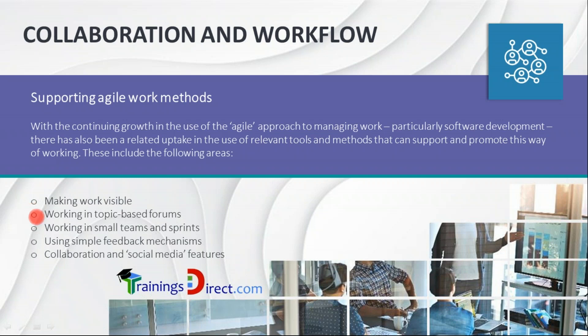Agile teams typically have five to nine people, but large agile organizations can have several agile teams, which is why agile program management and portfolio management exist. There should be feedback mechanisms such as daily quick meetings, end-of-sprint reviews to get feedback from customers or user representatives, internal retrospective meetings, and social media features enabling real-time message exchange and idea contribution with the ability to tag people.